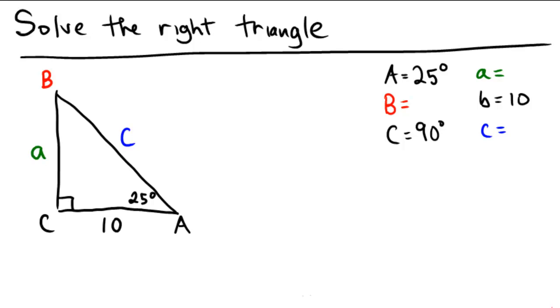Let's first start with the low hanging fruit here. Let's get angle B because all of the angles in a triangle always add up to 180 degrees. So in order to solve for B we can take 180 degrees, subtract angle A which is 25 degrees.